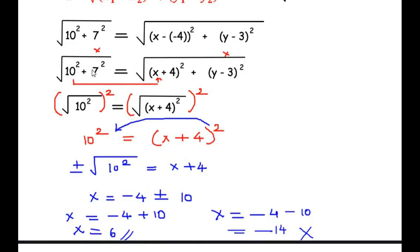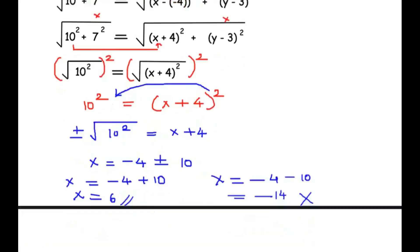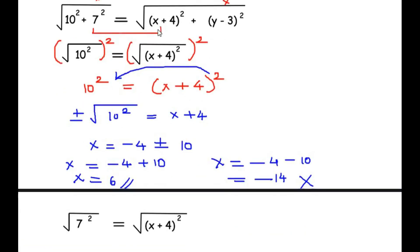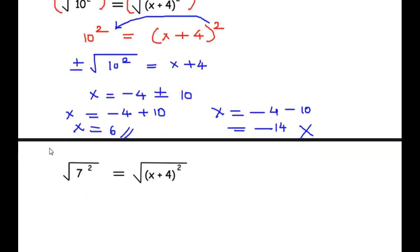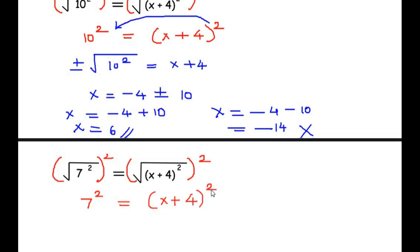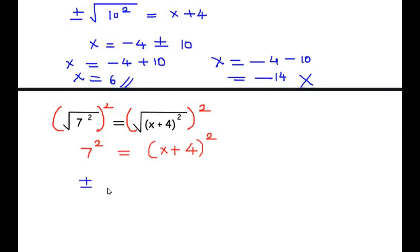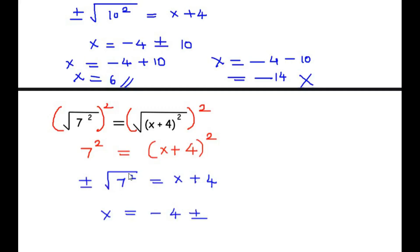Now it could be the other way around — 7² can represent (X + 4)². So we repeat the process with √(7²) = √((X + 4)²). Squaring both sides gives 7² = (X + 4)². Shifting the square to the other side gives ±√(7²) = X + 4. Isolating X: X = -4 ± √(7²), and since 7² = 49, √49 = 7.